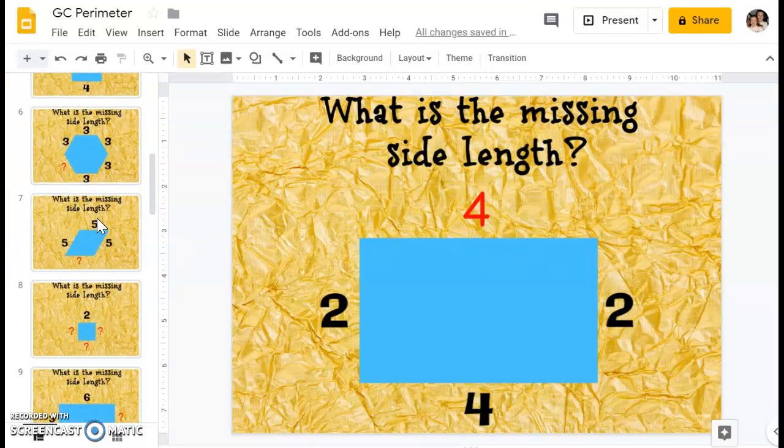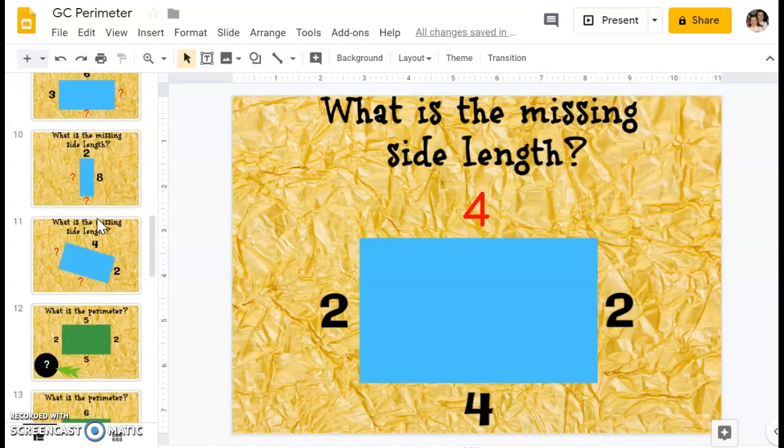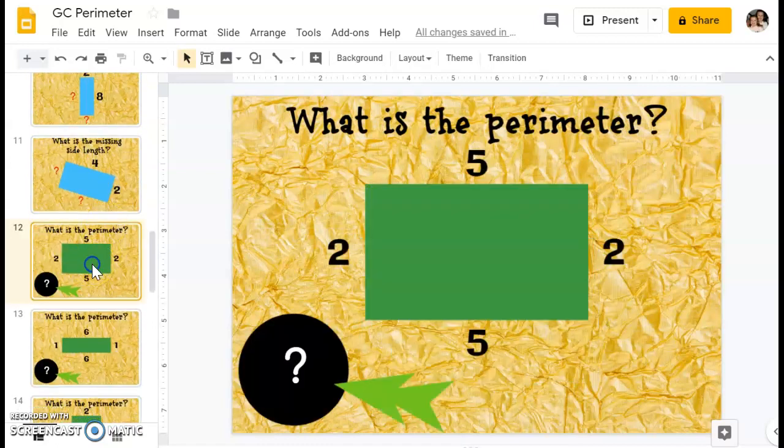There are 10 of those practice ones, so you can go ahead and figure those out. And then when you get to the green shapes, these are all going to be rectangles or squares. When you get to the green ones, you're going to be telling me what the perimeter is.